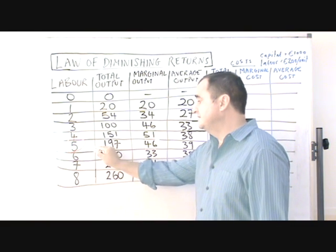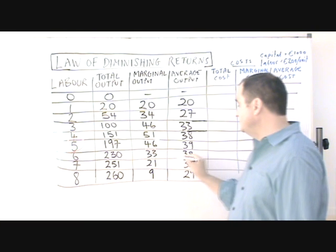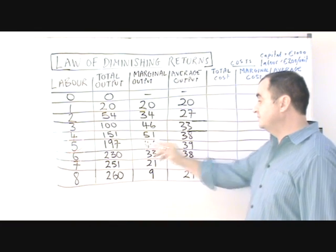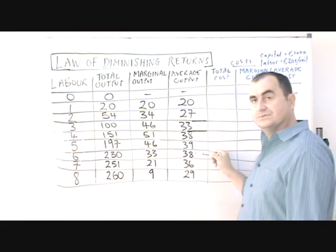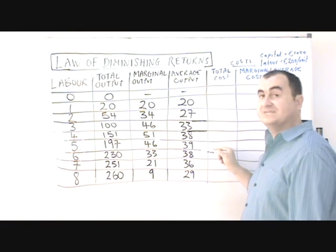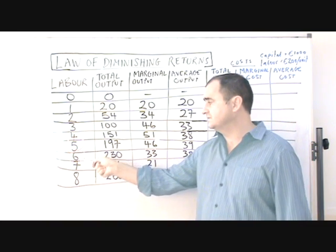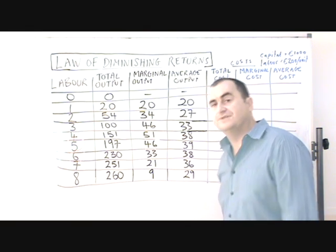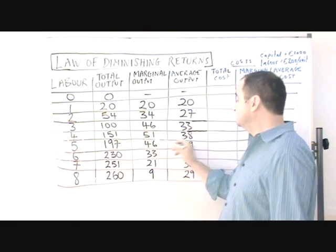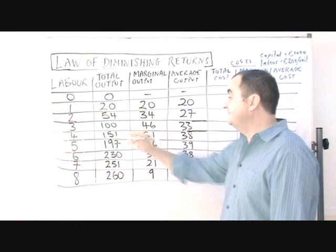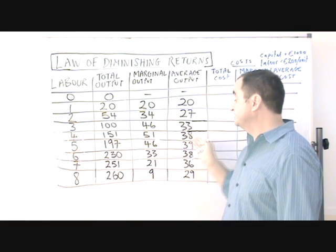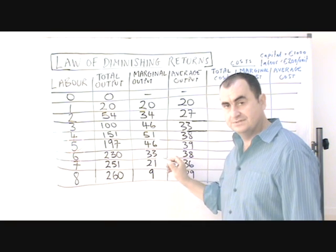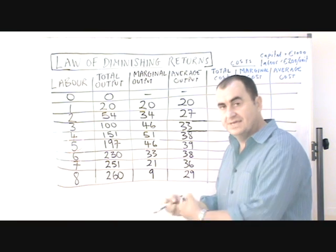If they continue to add workers, eventually even the average output falls. That happens with the sixth worker. The sixth worker is the first whose addition causes average output to fall. Why didn't it happen with the fifth worker? The fifth worker only added 46 compared to the fourth worker's 51, but 46 was still higher than the average at that time, so it pulled the average up a little. But the sixth worker's marginal output was so low — 33 — which was below the average, it pulled the average down.